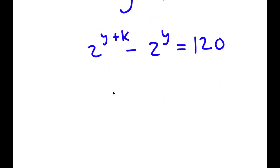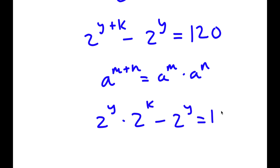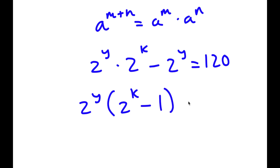If I have something in the form a to the power of m plus n, this is equal to a to the power of m times a to the power of n. So 2 to the power of y plus k can be written as 2 to the power of y times 2 to the power of k. Now I have this minus 2 to the power of y is equal to 120. Factoring out 2 to the power of y, I get 2 to the power of y times 2 to the power of k minus 1 is equal to 120.